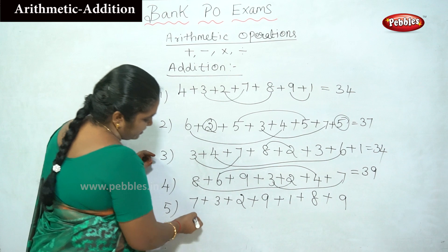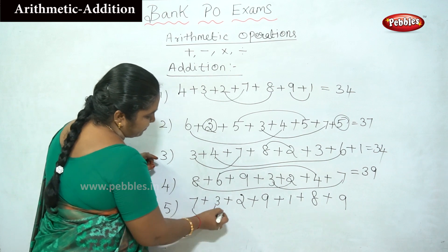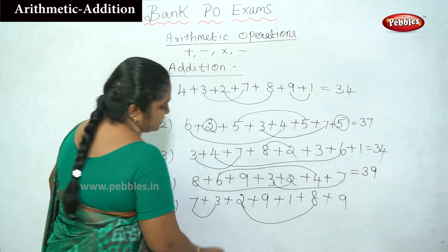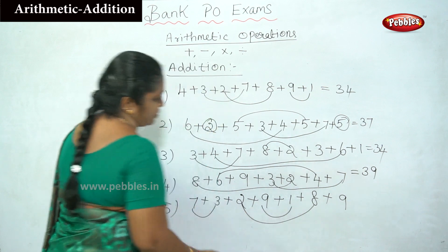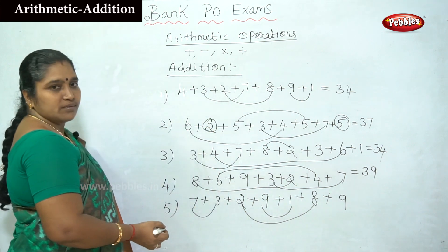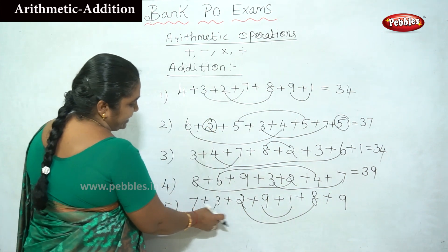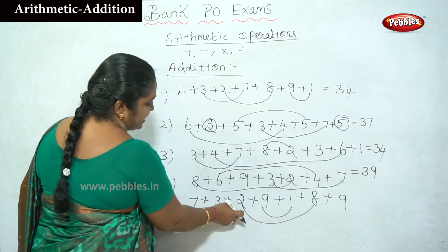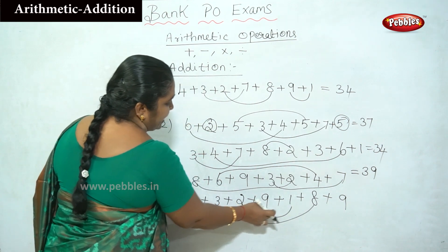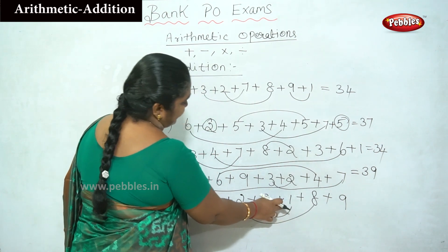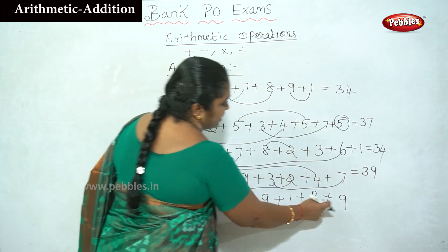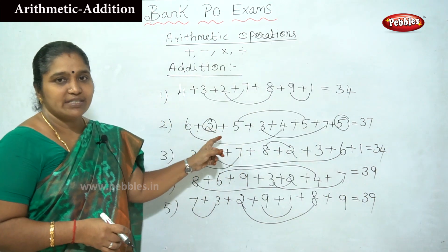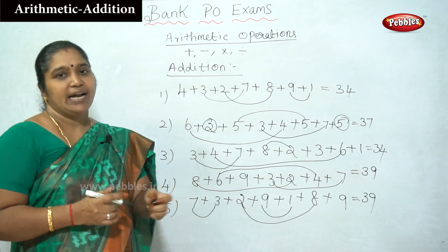See: 7 plus 3 is 10, 2 plus 8 is 10, and 9 plus 1 is 10. So: 7 plus 3 is 10, 8 plus 2 is 10 — that is 20. Then 9 plus 1 is 10 — that is 30. Then 30 plus 9 is 39. These are the easy ways for addition.